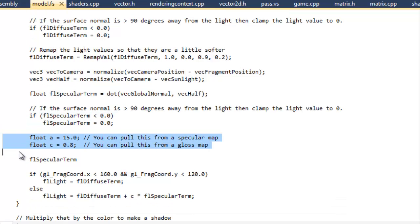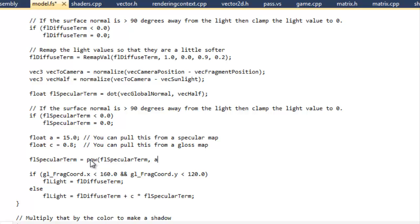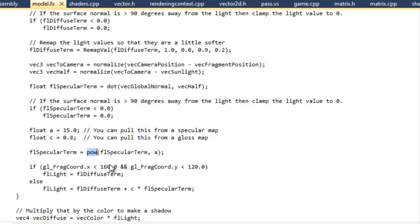Now these are our A and C terms, which normally you would get from a gloss map or a specular map that an artist would make. But to keep this simple, I just chose some handy values that look good with our presentation so that you can see what's going on. And now we have to apply the power. So we have to raise it to the A. Specular term raised to the A power. This is the GLSL function for raising to a power.